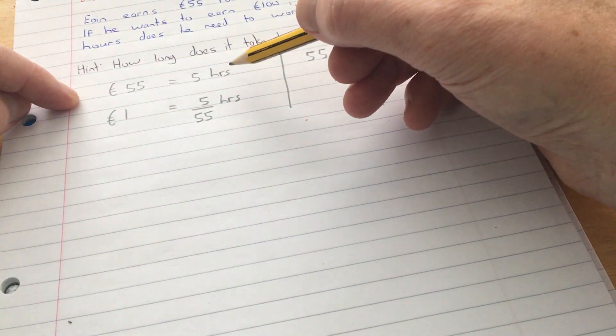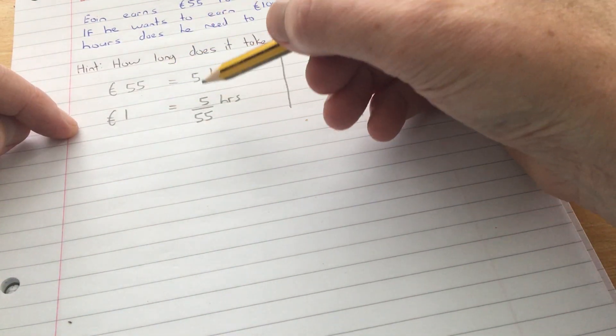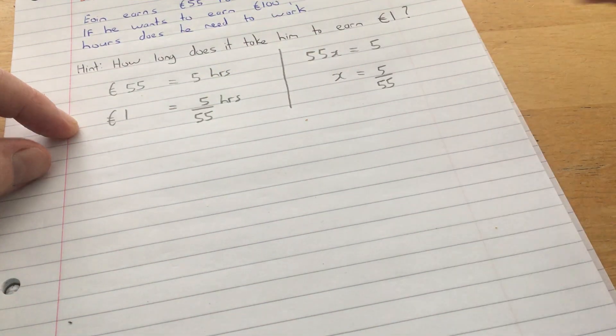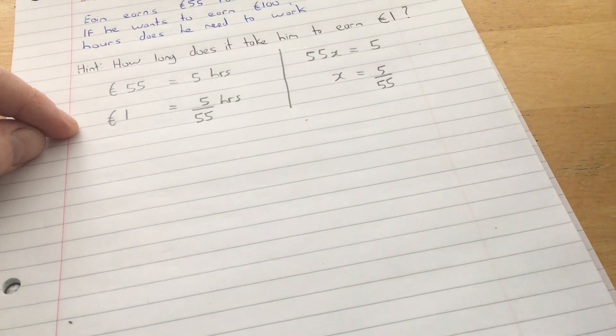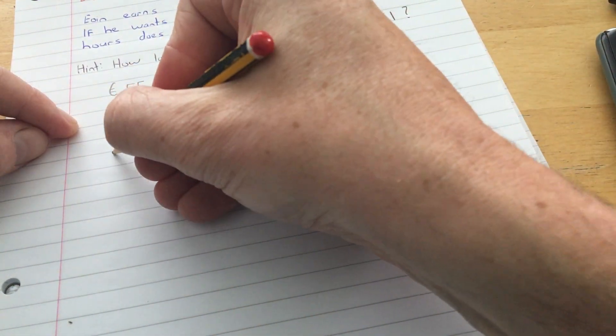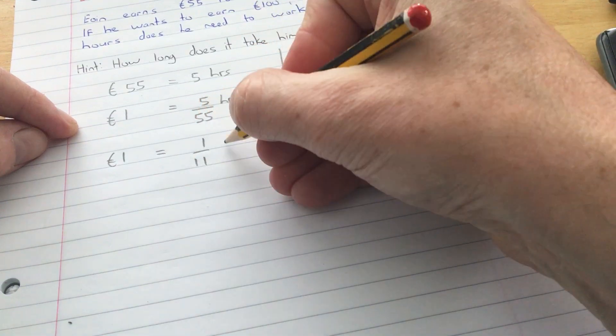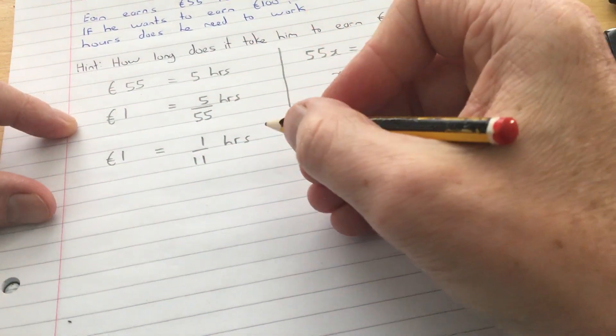For 55 euro, it's 5 hours work. So for 1 euro, it would be 5 hours divided by 55. You can leave it as 5 over 55 if you want. For 1 euro, he has to work 1 eleventh of an hour.